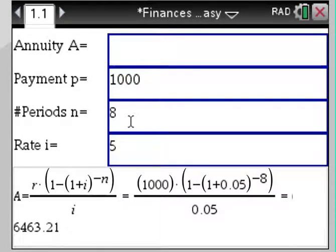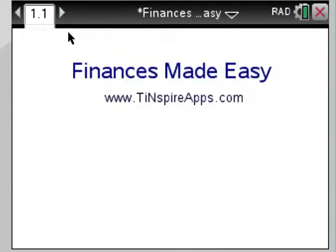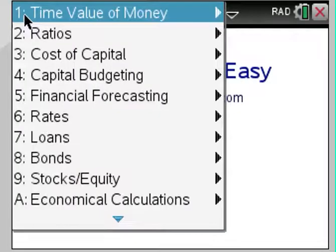Again, if you change any numbers here, the annuity will change immediately. Over 10 years, we will get $7,700. So it's as usual, pretty straightforward to use and easy to navigate also by simply pressing the menu button.